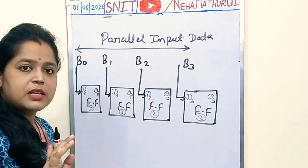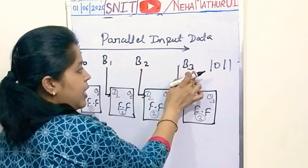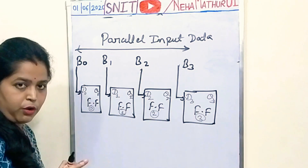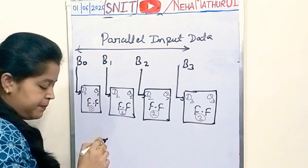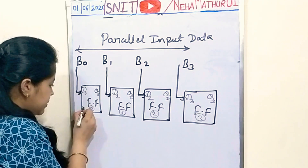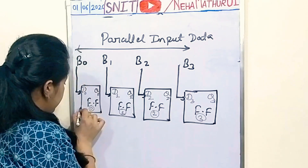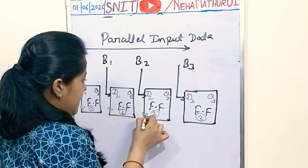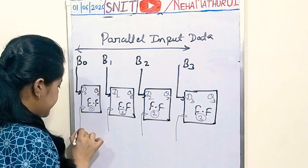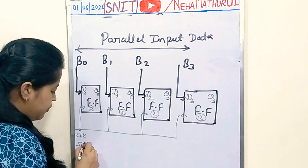Suppose you want to enter 1011 — that means 1011 you are going to apply over here for each individual flip-flop. Now the next thing is the clock, which should be common for all the flip-flops. So I am making a common clock signal for all 4 flip-flops — a single clock to operate all 4 flip-flops in the form of pulses.